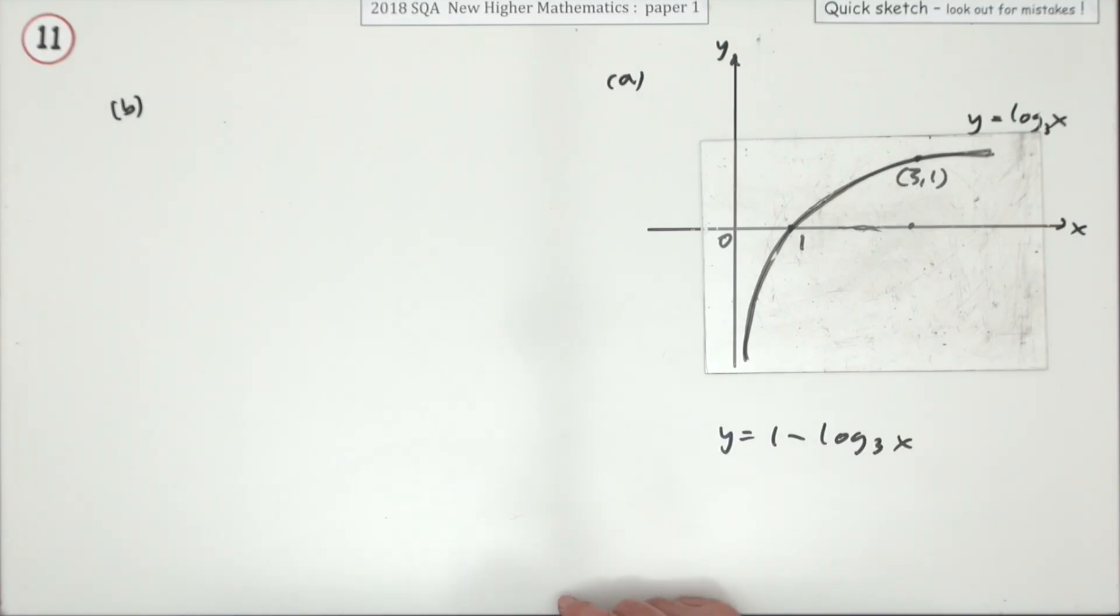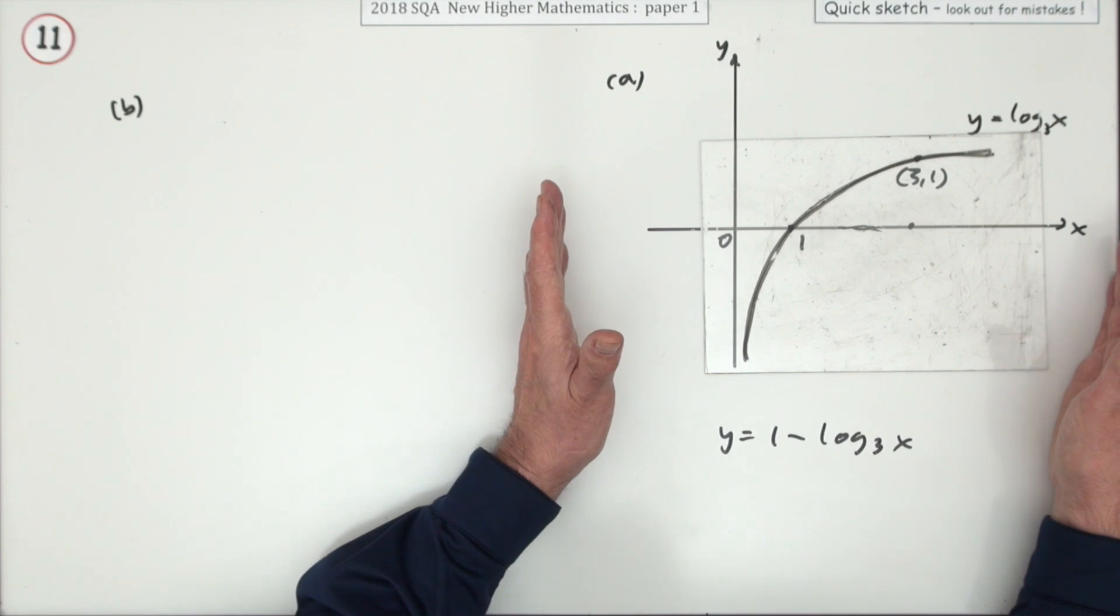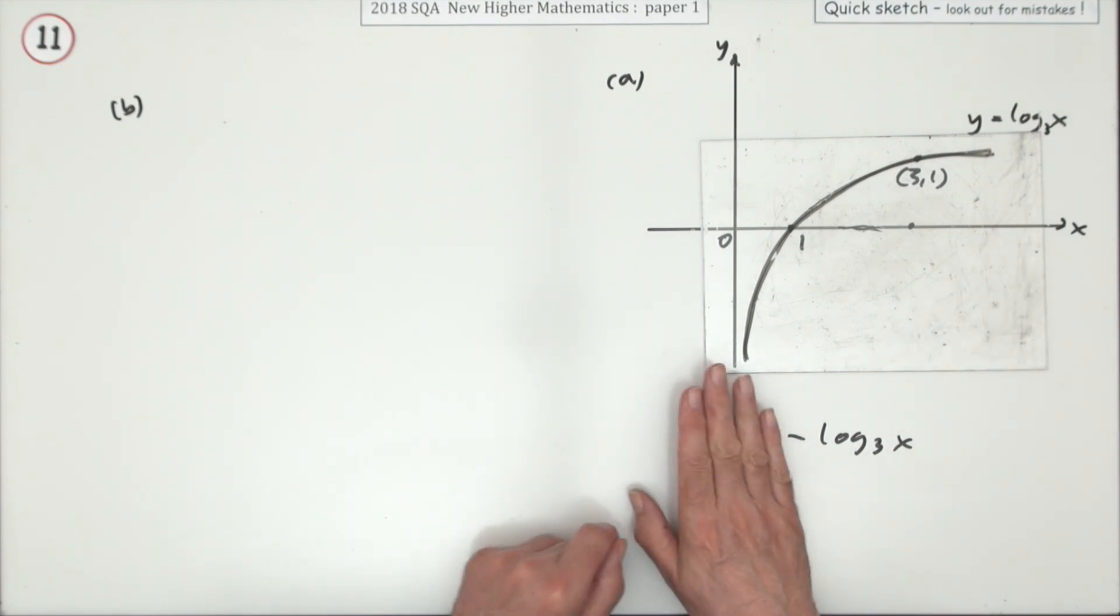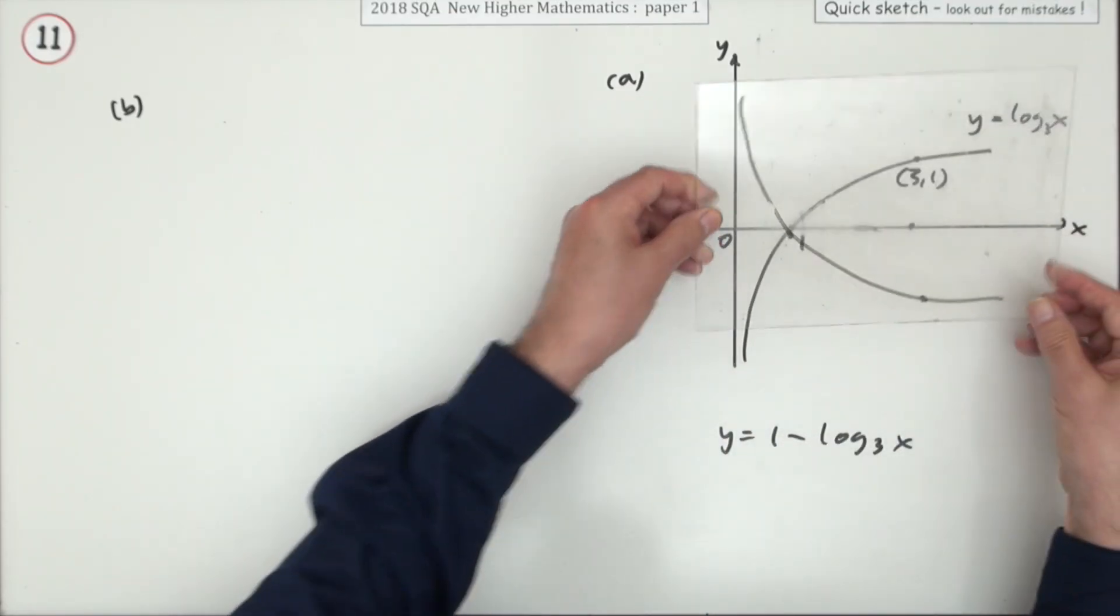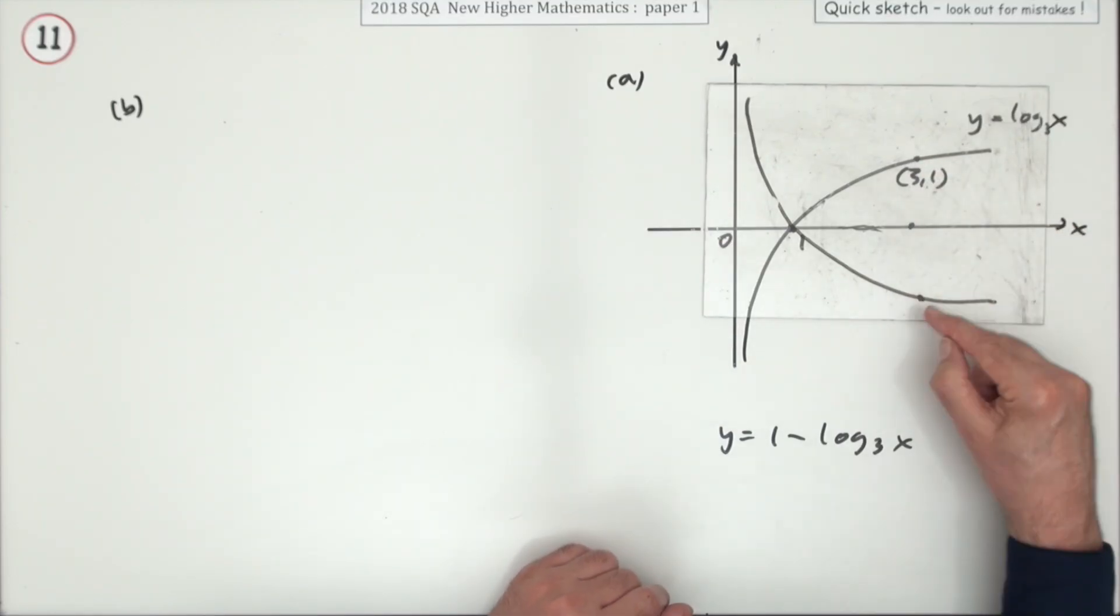It's a log graph but for this part it doesn't really matter, you're just carrying out two simple transformations. First of all the negative of it flips all the y coordinates, so that's going to flip over like this, meaning point (3,1) now becomes (3,-1). The 1 at the front adds 1 onto everything.